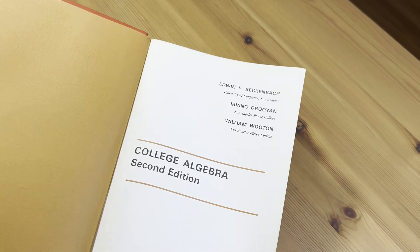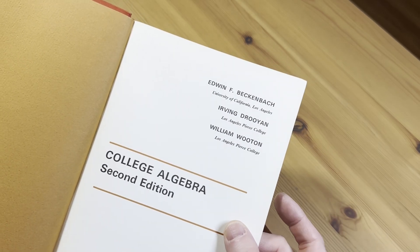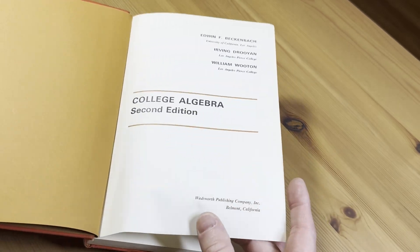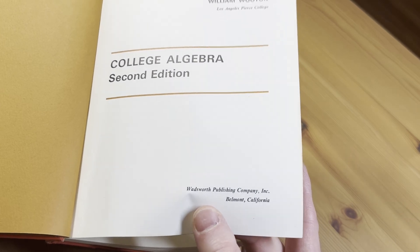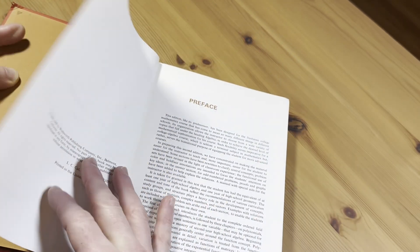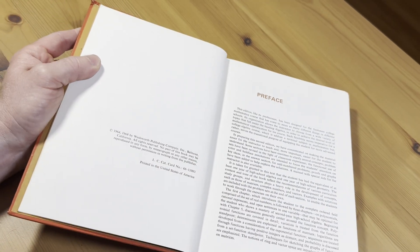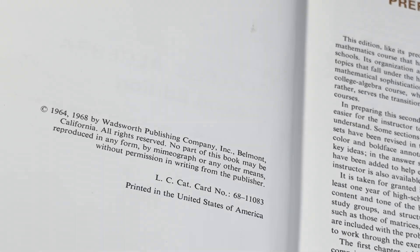You see College Algebra by Beckenbach, Drouillon, and Wuton. This is published by the Wadsworth Publishing Company, Belmont, California. And here's the copyright. So this one is from 1968.